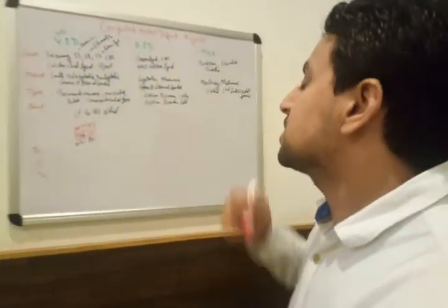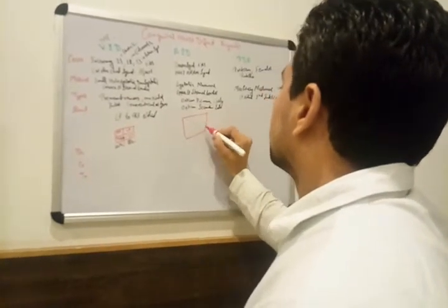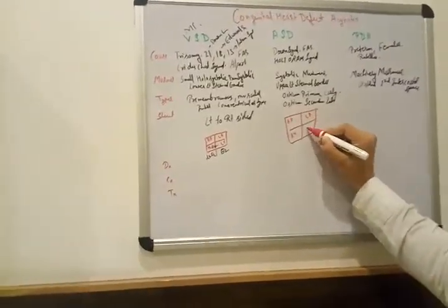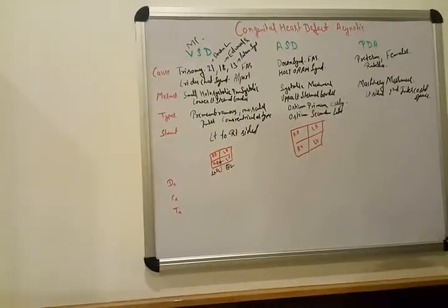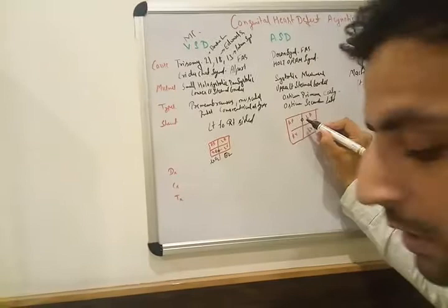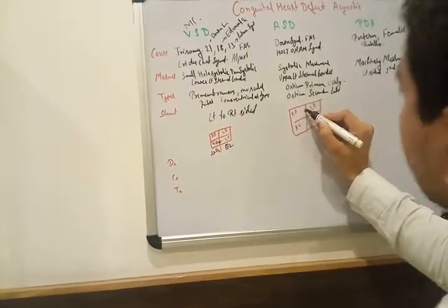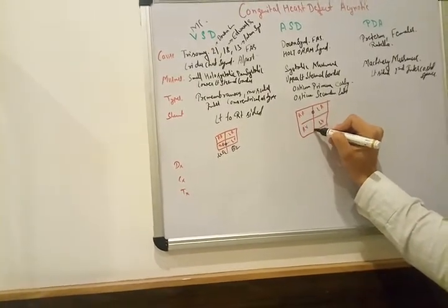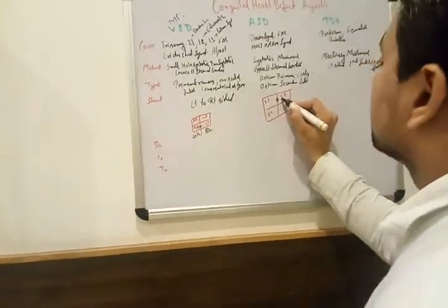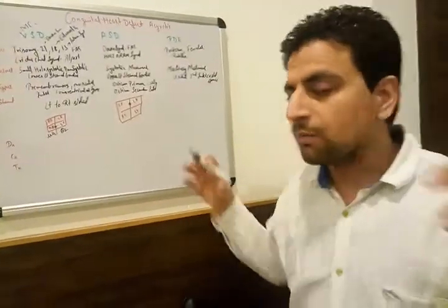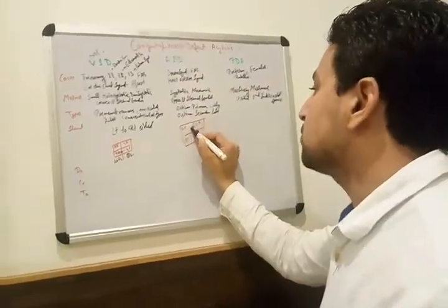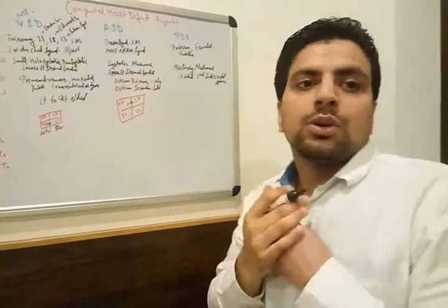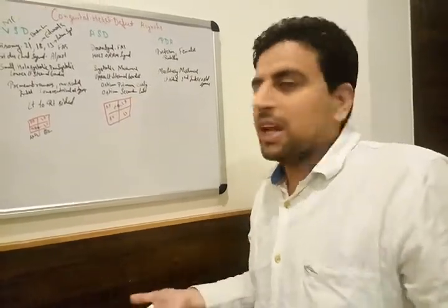In ASD, there is a gap between the left atrium and right atrium — involving ostium primum and ostium secundum. The left atrium has higher pressure due to pulmonary veins draining into it. So blood flows from left atrium to right atrium — high to low pressure. Oxygenated blood mixes with deoxygenated blood, but since it is oxygenated entering deoxygenated, there is no cyanosis.